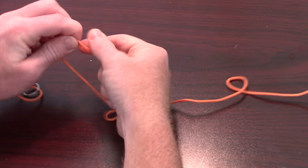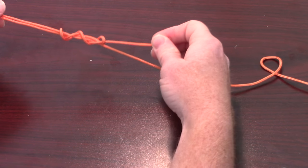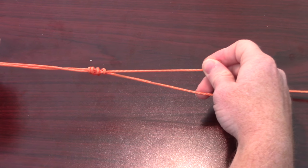After you have reached 4-5 wraps, pull on the tag end to bring the knot together. Don't pull too tight just yet though.